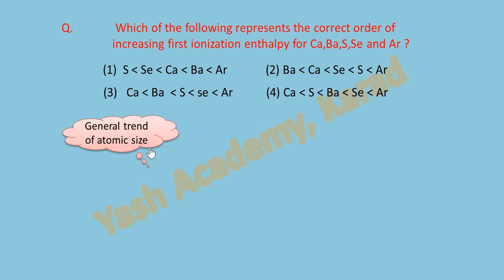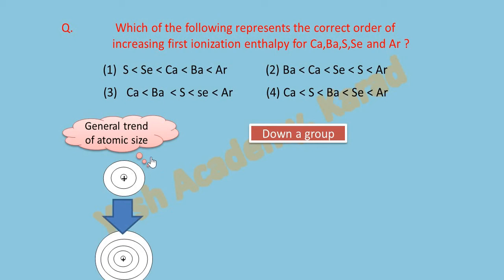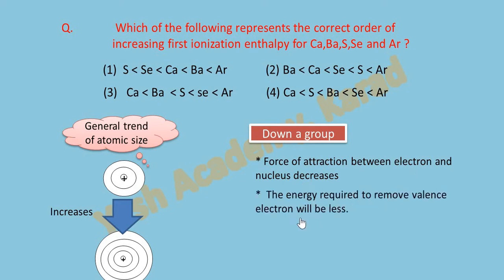Down a group, as we go from top to bottom in any group of periodic table, the atomic size goes on increasing because there is an addition of new shell every time. The force of attraction between the valence electron and the nucleus decreases. So the energy required to remove valence electron will be less. So we can say down a group, the ionization enthalpy decreases.